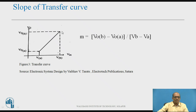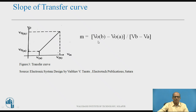The slope of the transfer characteristics can be obtained by this formula. From the transfer curve, where input varies from V-a to V-b and output varies from V-oa to V-ob, the slope M is given by: M = ΔV-o / ΔV-in = (V-ob − V-oa) / (V-b − V-a).